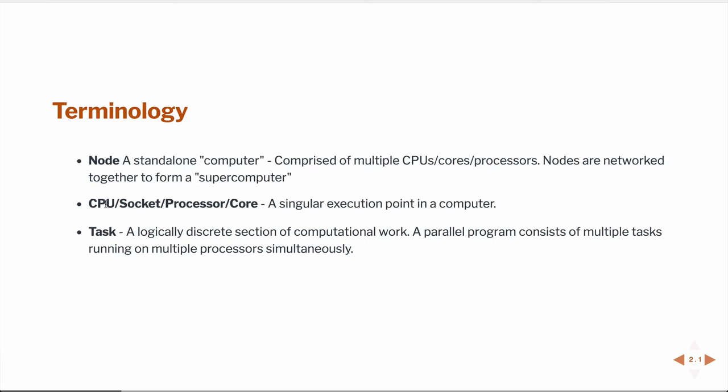We have tasks, and a task would be a single instance of computational work. Often we have multiple tasks that we can do at the same time, and we're going to run them on multiple processors or multiple cores simultaneously. Those cores can exist on a single node or across a network of nodes on a supercomputer.